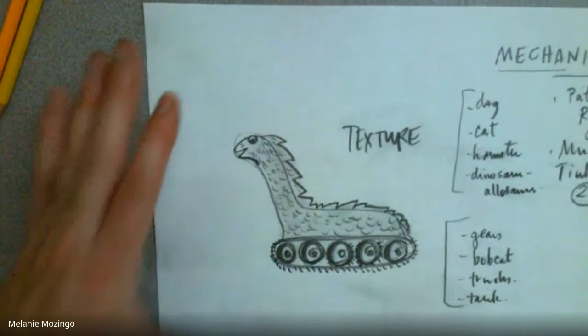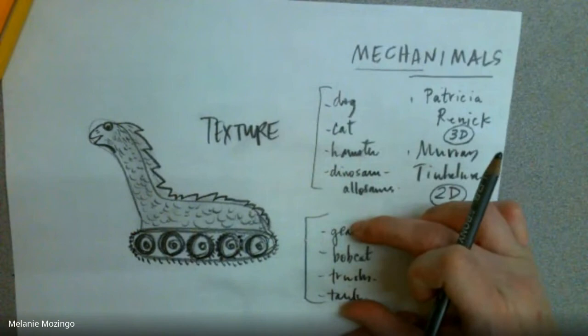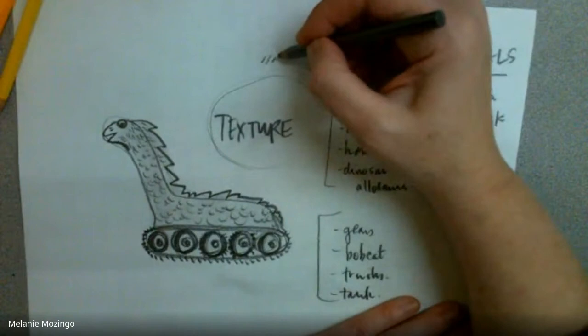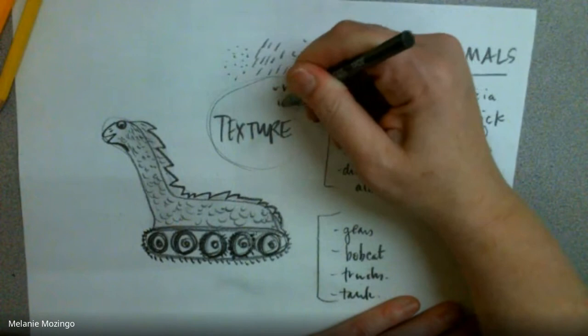So again, this idea of a mechanical animal. The things that we really want to emphasize - are we combining some sort of a dog, some sort of a cat? Are we putting texture? Texture, remember, could be bumpy, hairy, scaly. It could have a sandy, rough kind of texture. Maybe it has spikes. Texture shows how something feels to the touch.